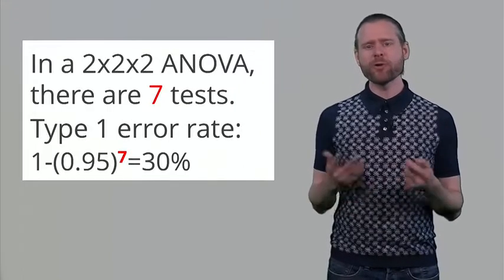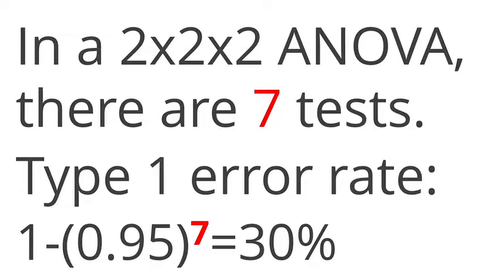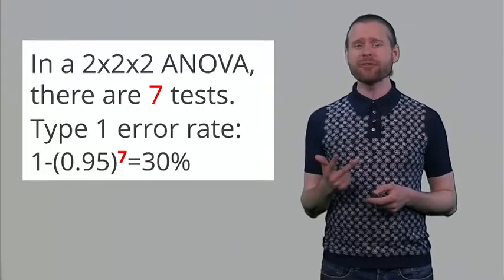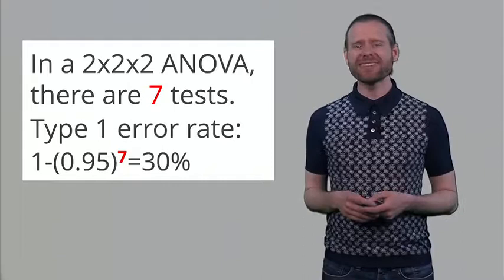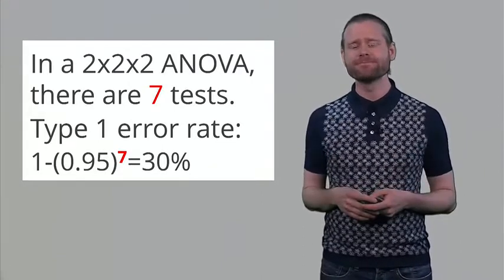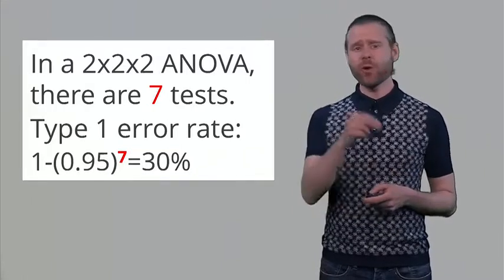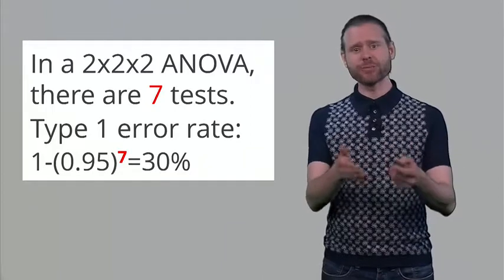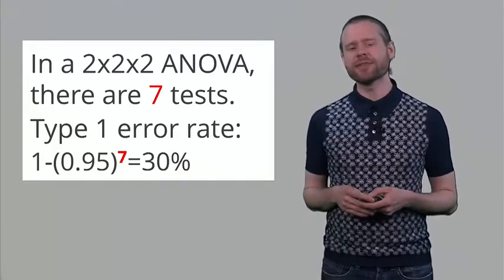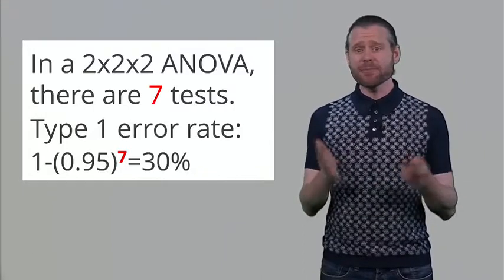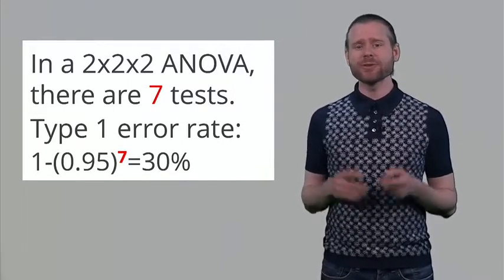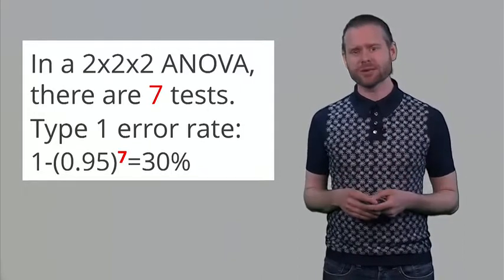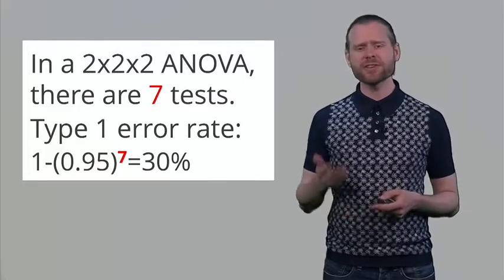Consider a 2x2x2 ANOVA with two factors times two factors times two factors. In this situation you have three main effects to test, three two-way interactions, and one three-way interaction, totaling seven tests from just one study. The Type 1 error rate if you do all these tests is 1 minus 0.95 to the power of 7, which is actually a 30% error rate — substantially higher than the intended 5%. The probability of saying there is something when there is nothing is much higher than 5%.